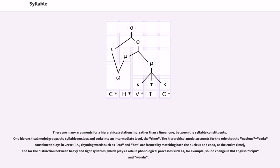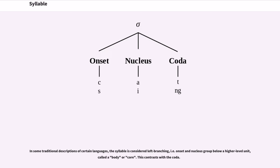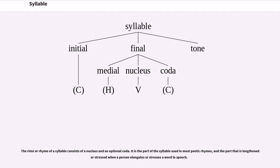One hierarchical model groups the syllable nucleus and coda into an intermediate level, the rhyme. The hierarchical model accounts for the role that the nucleus plus coda constituent plays in verse, and for the distinction between heavy and light syllables, which plays a role in phonological processes such as sound change in Old English. In some traditional descriptions of certain languages, the syllable is considered left branching, i.e. onset and nucleus group below a higher level unit, called a body or core. This contrasts with the coda.